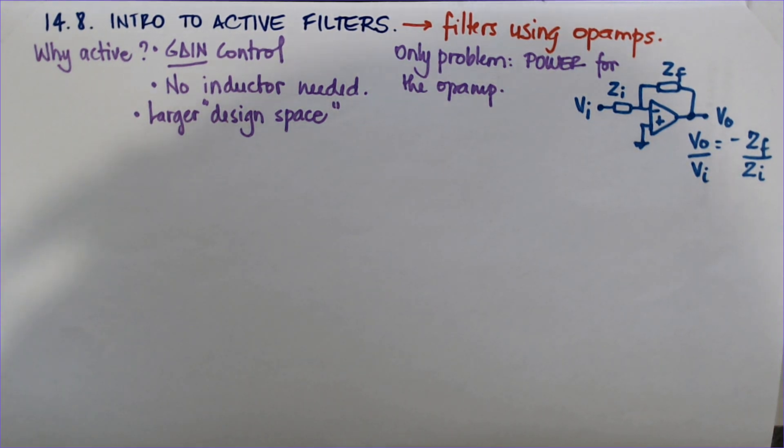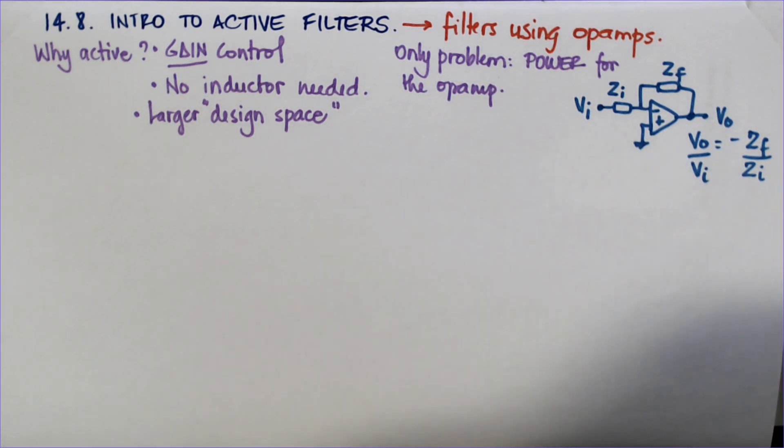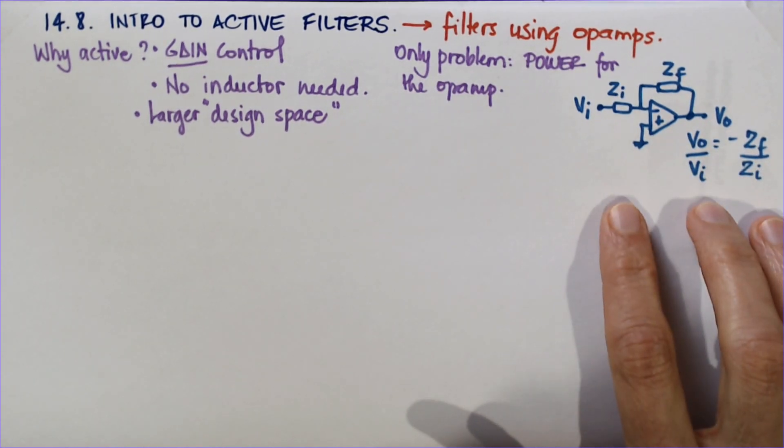In this class we're going to talk about active filters, the last section of chapter 14, and it fits really well with 285.